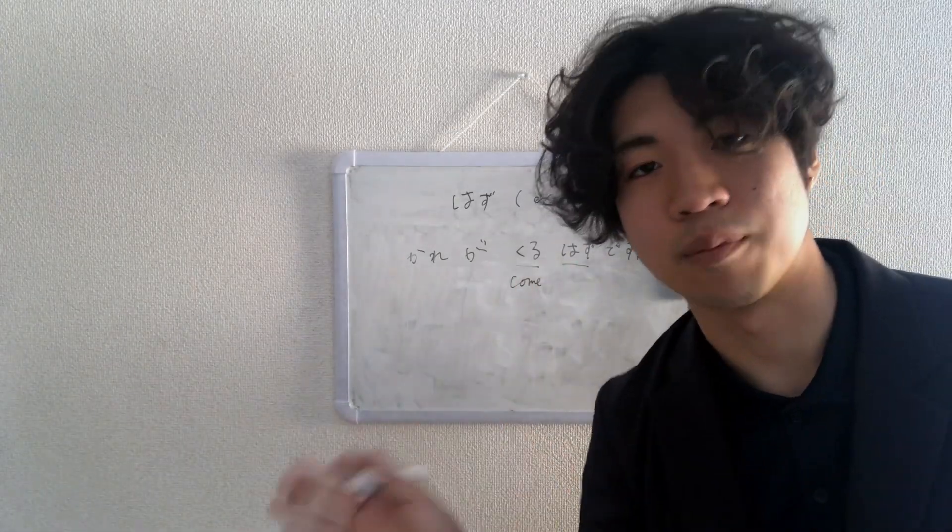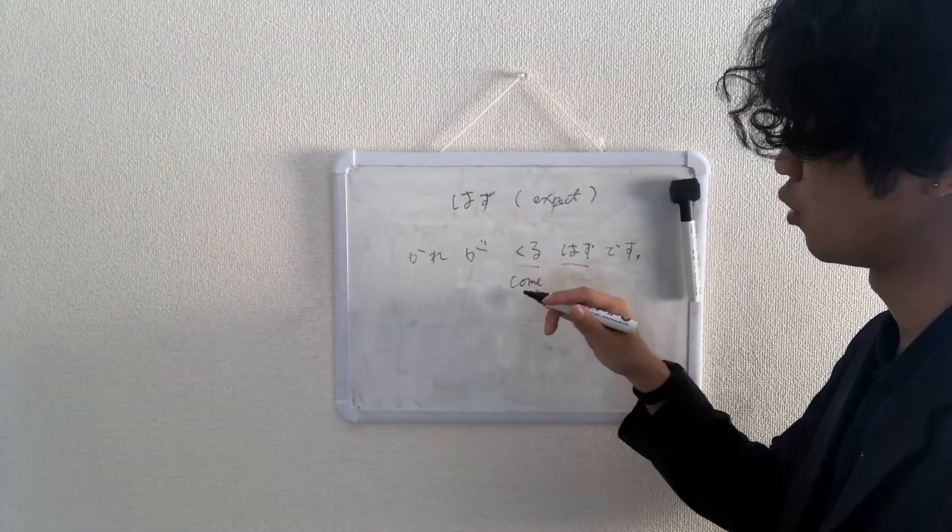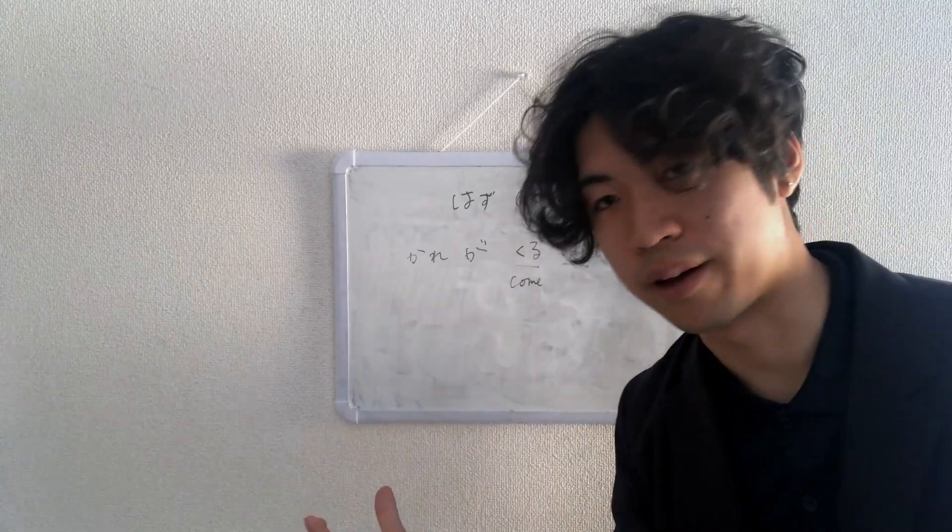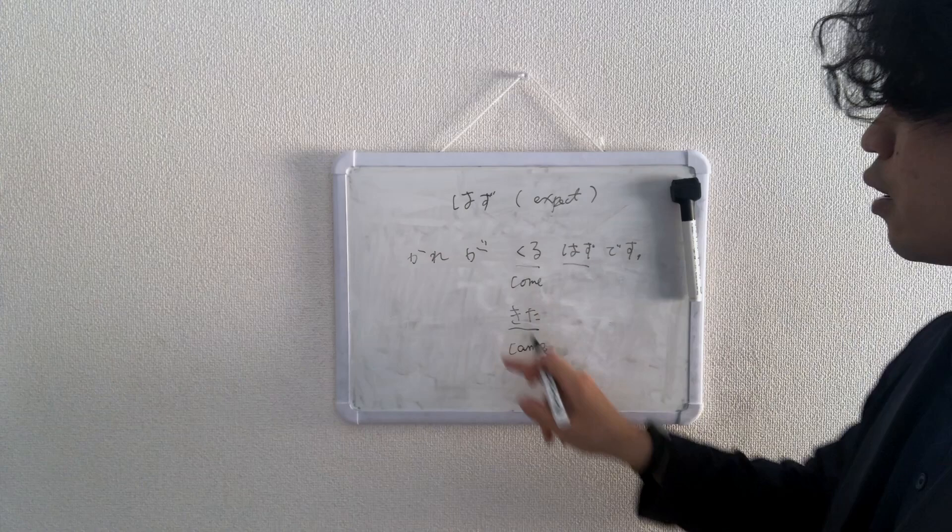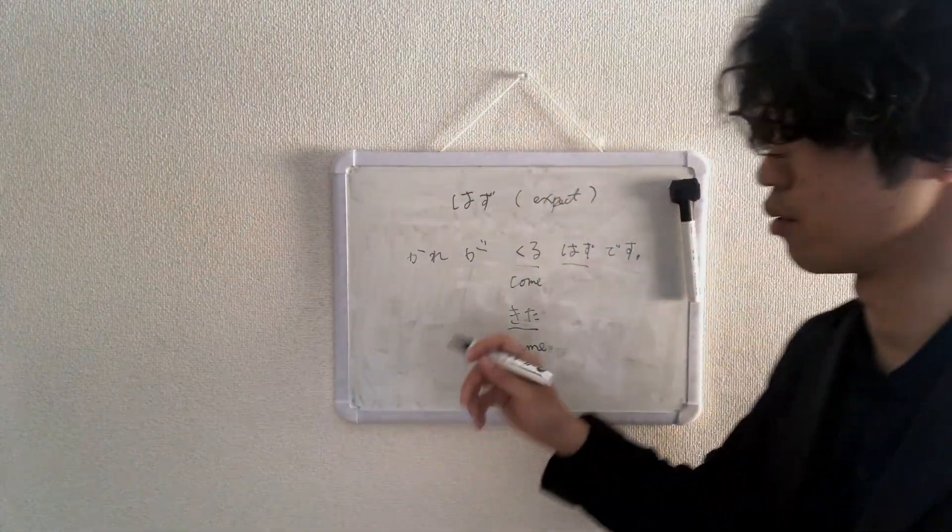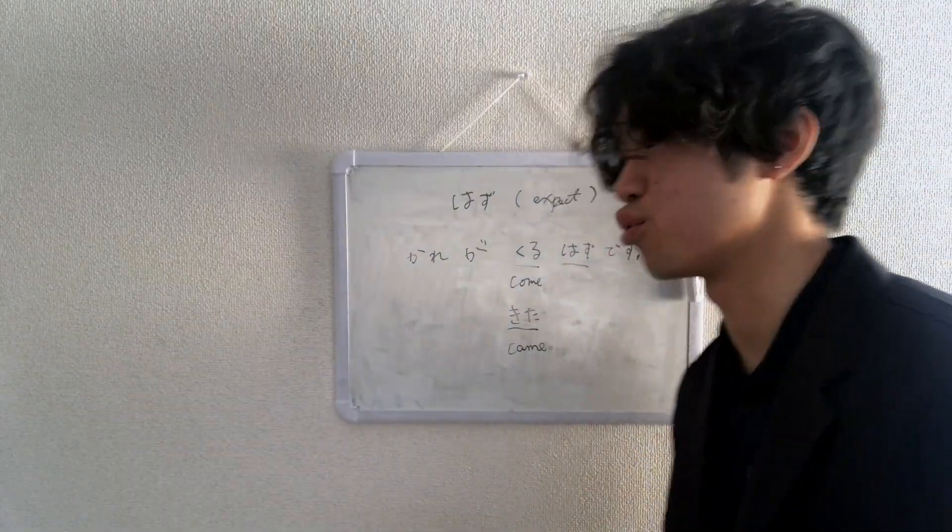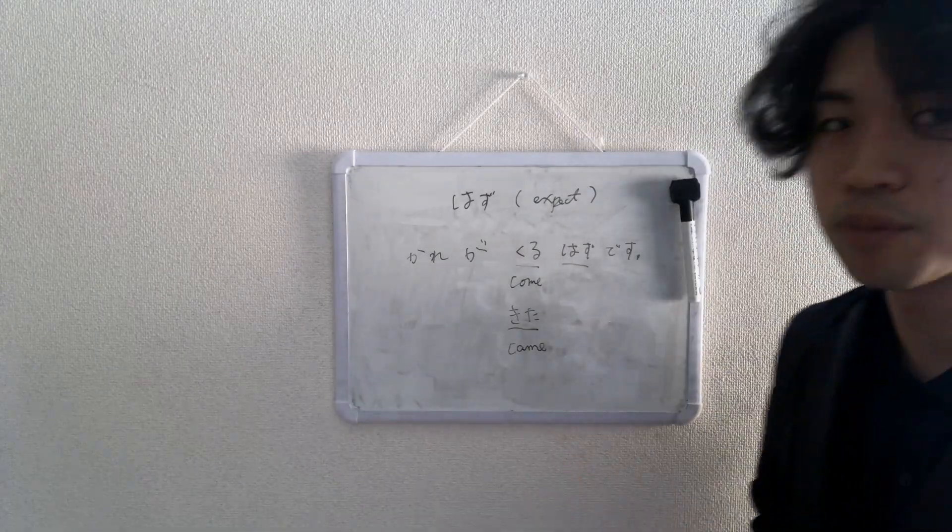He is supposed to come. It's informal, you don't want to use mass form, it's formal. Typically in Japanese when you conjugate, you want to use the informal way. You can use this 来る in past tense, so 彼は来たはずです. He's supposed to have come, I expected that he came, he ought to have come. 来た is informal also.